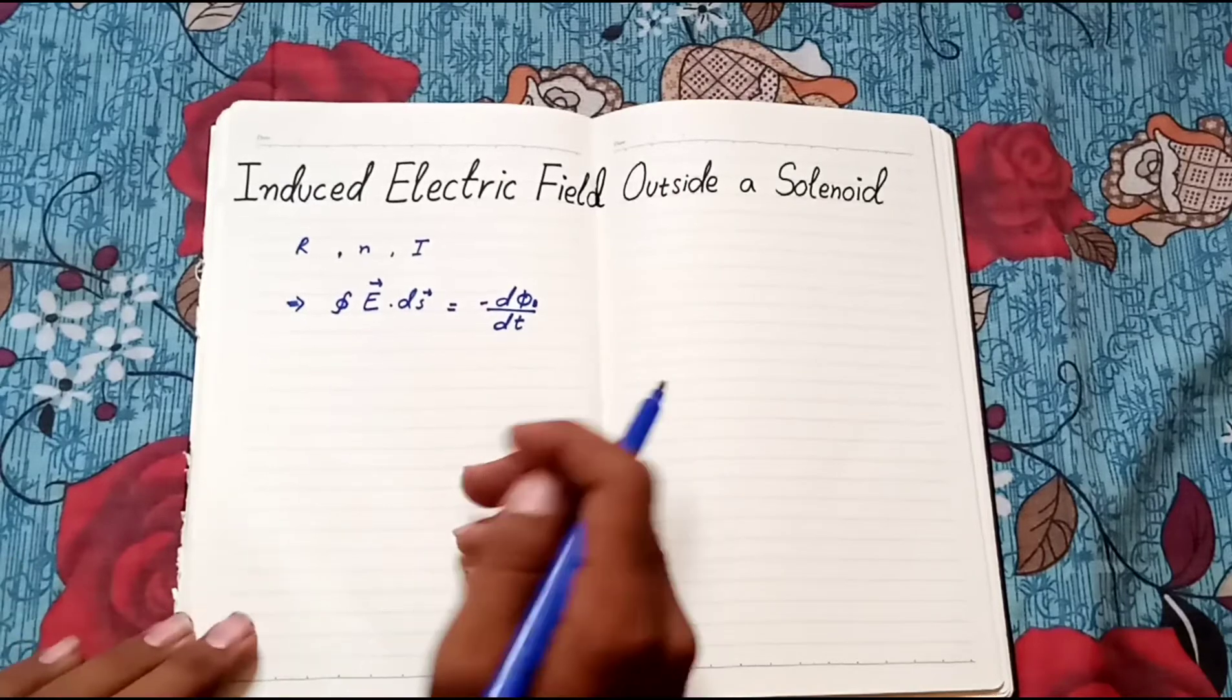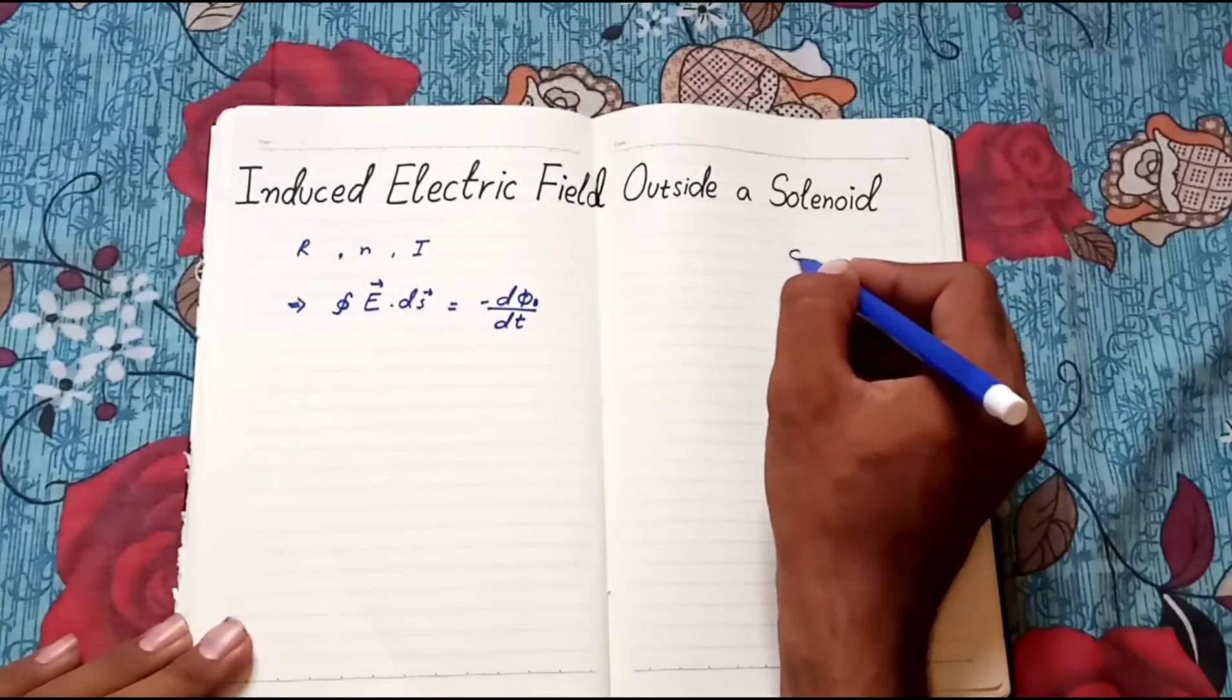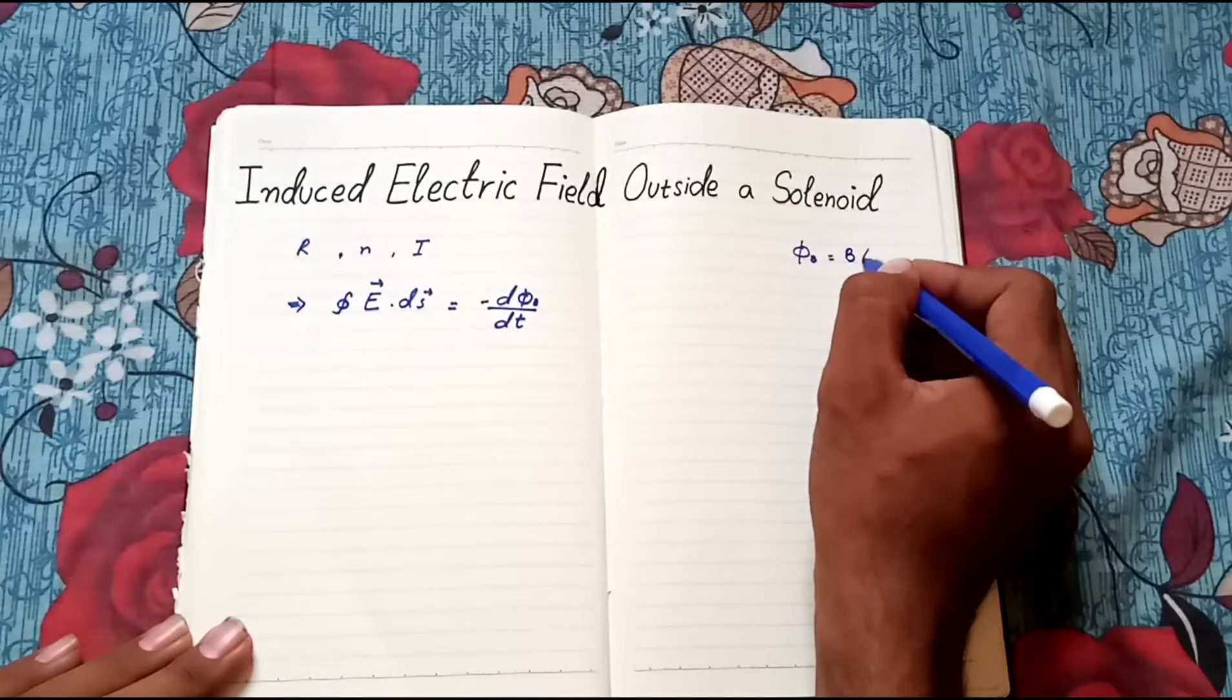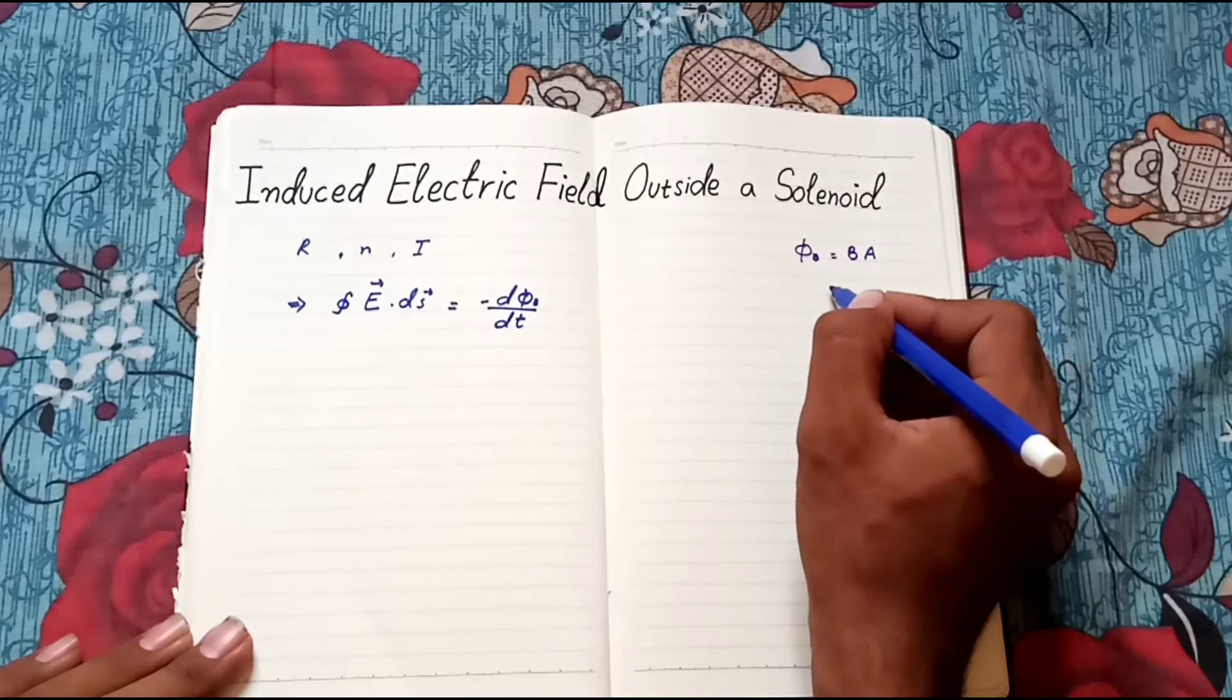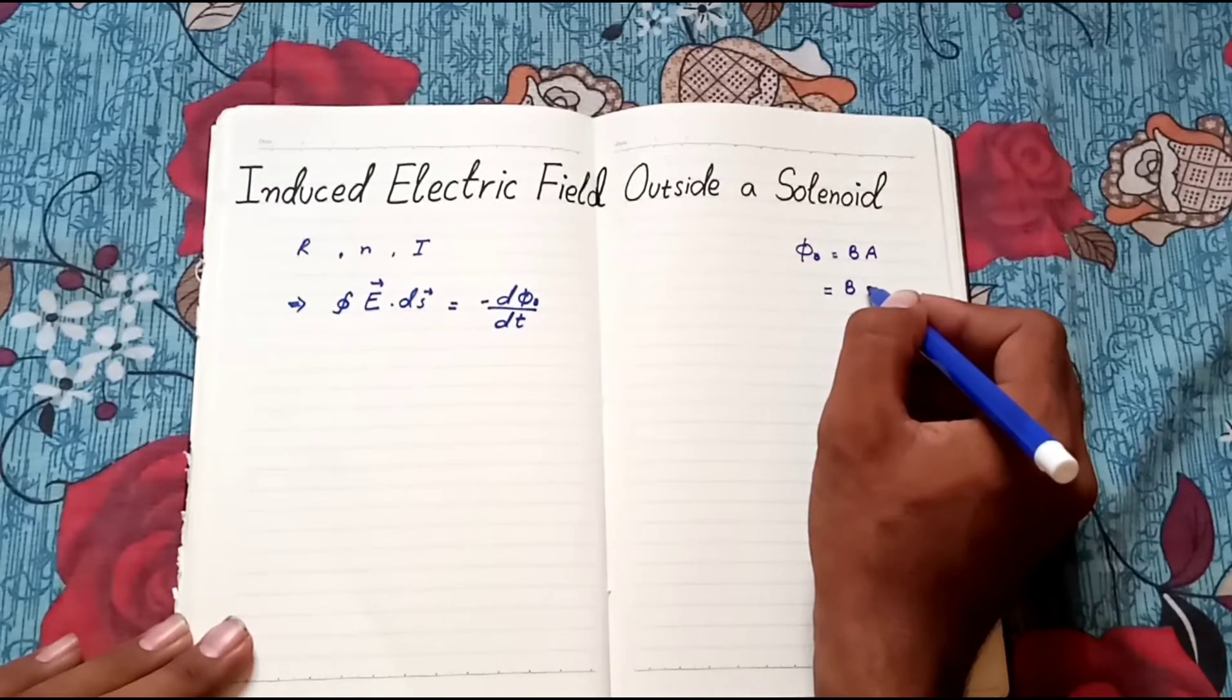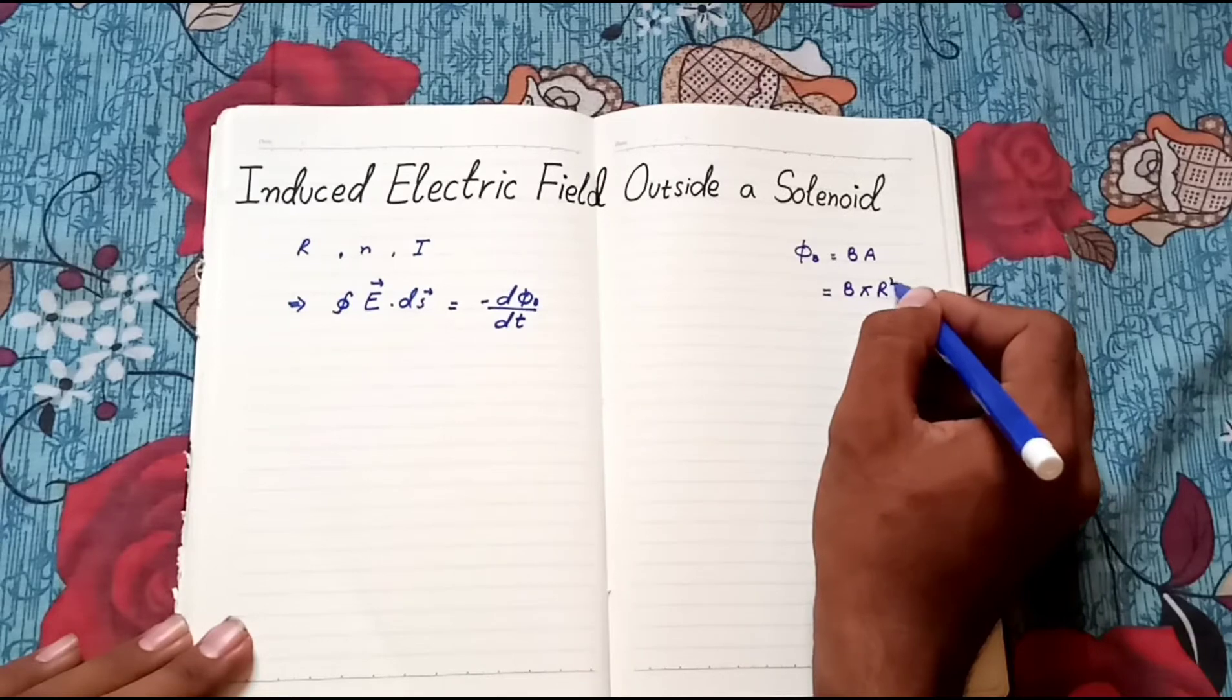We know that magnetic flux is equal to magnetic field into area, and area of solenoid is given by pi r squared.